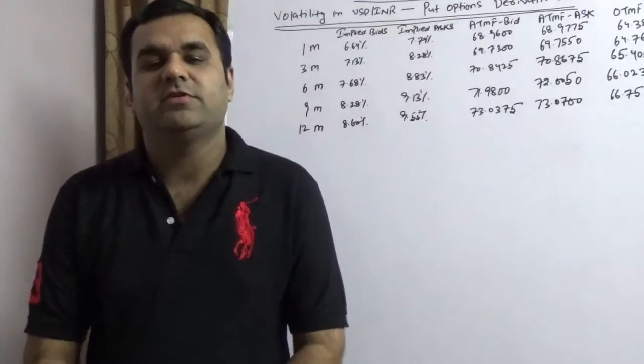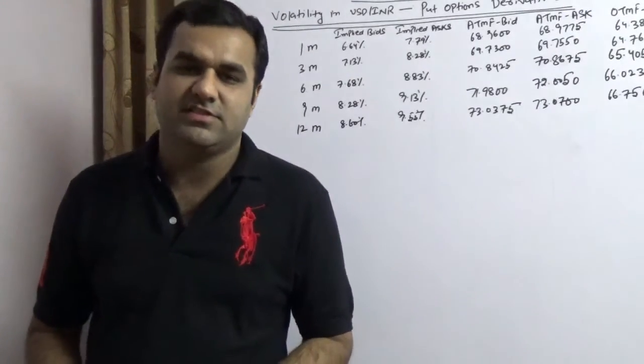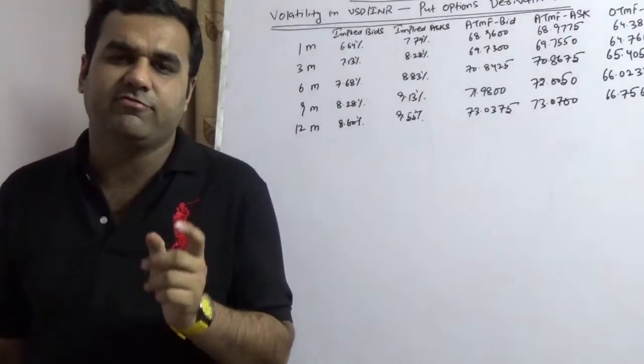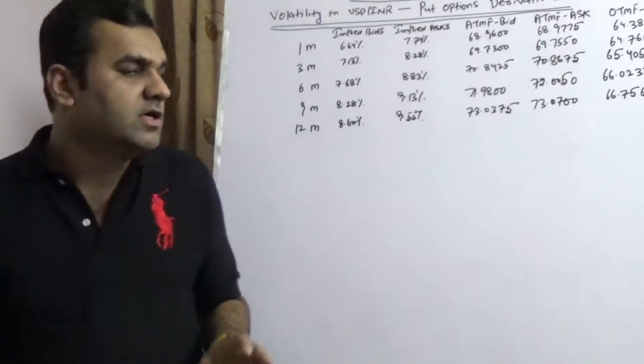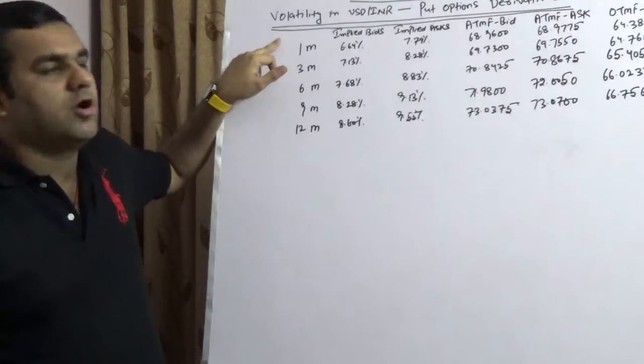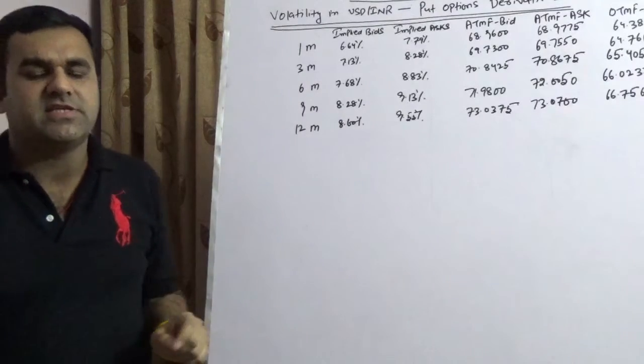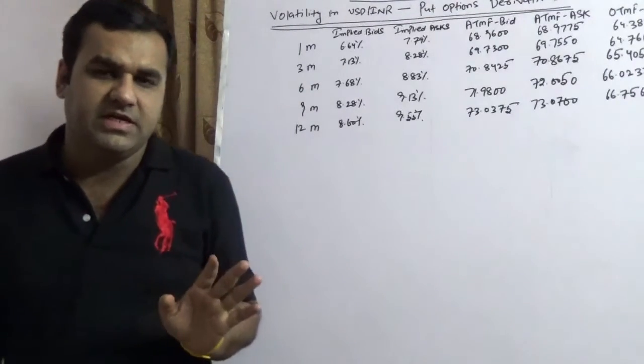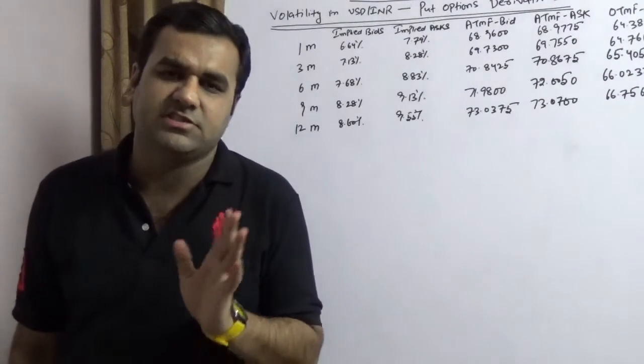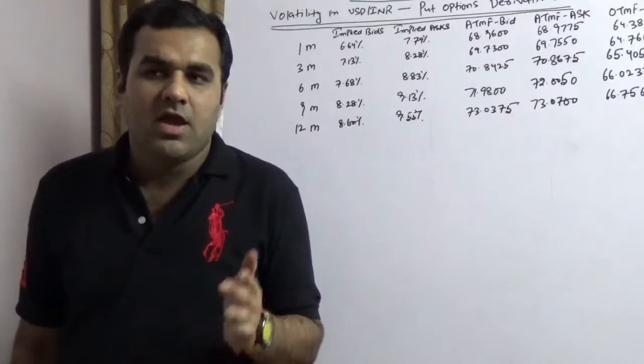Good evening everybody, thank you very much for joining in. This is the 95th in the series wherein we are going to speak about a very interesting topic which is very relevant for a corporate treasurer in India today. The topic is titled volatility in USD INR and put option derivatives. As we understand, INR is facing big volatility and in the last few sessions INR has faced tremendous volatility and now it is trading at roughly 68.54 levels.